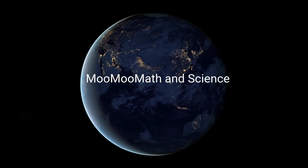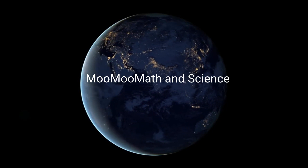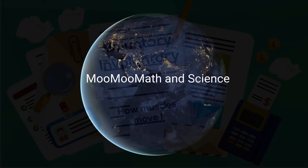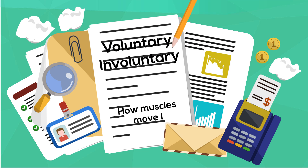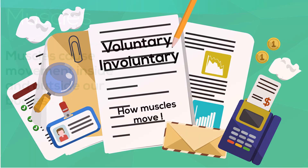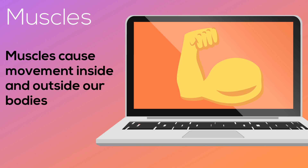Welcome to MooMooMath & Science. In this video I'd like to talk about the difference between voluntary and involuntary muscular movement. Our muscular system allows us to move both inside and out. Humans have an amazing range of movement. Let's take a look.